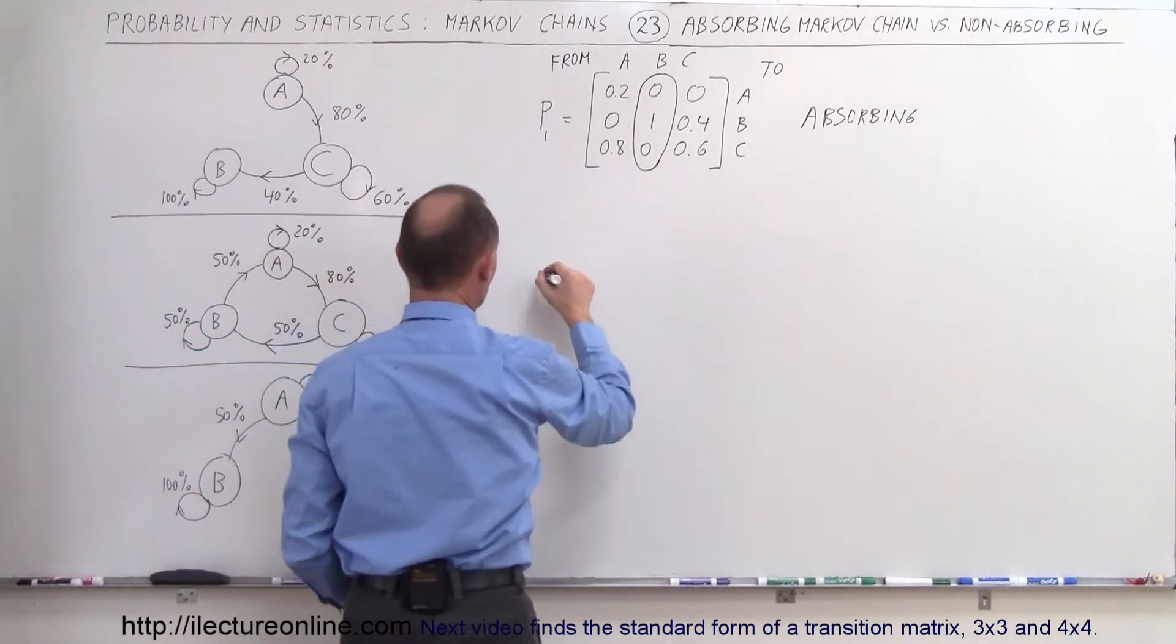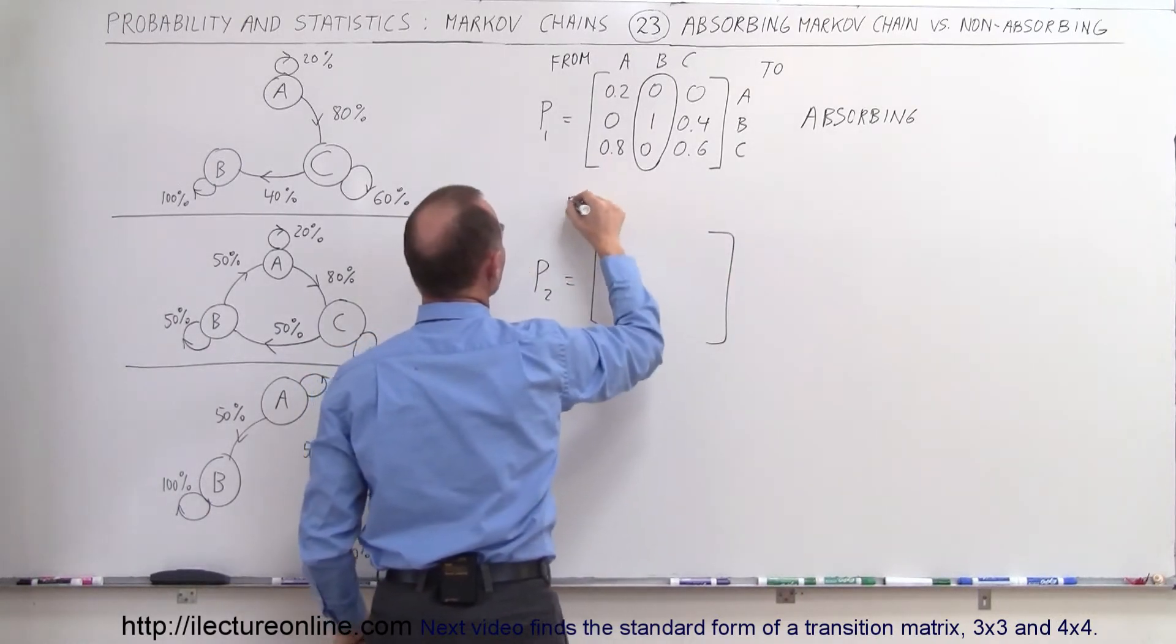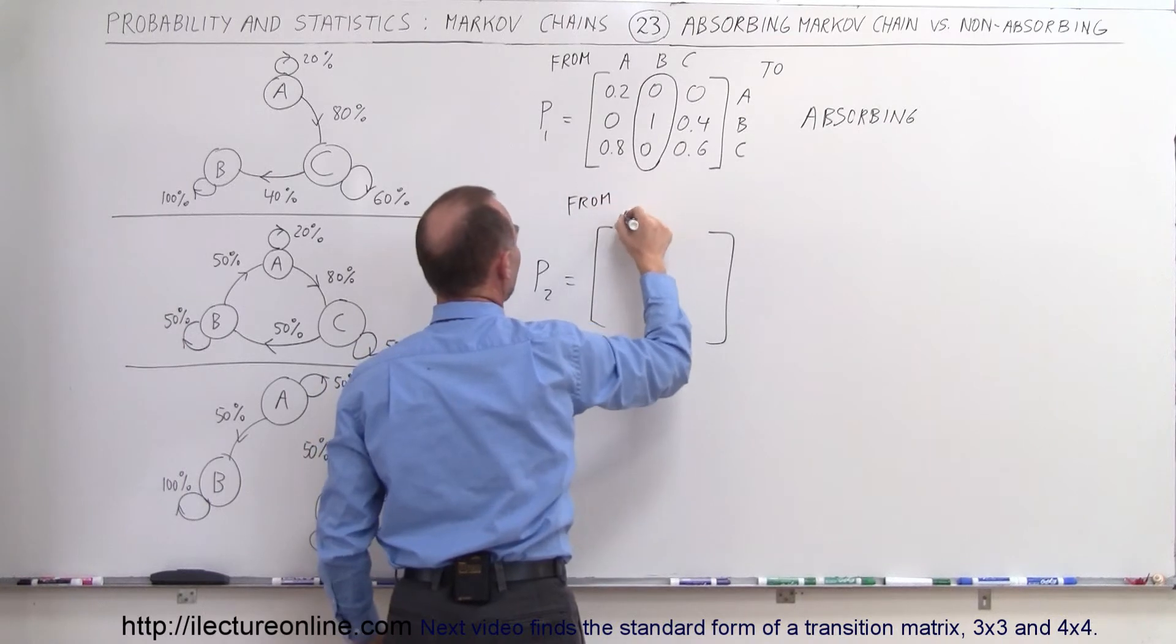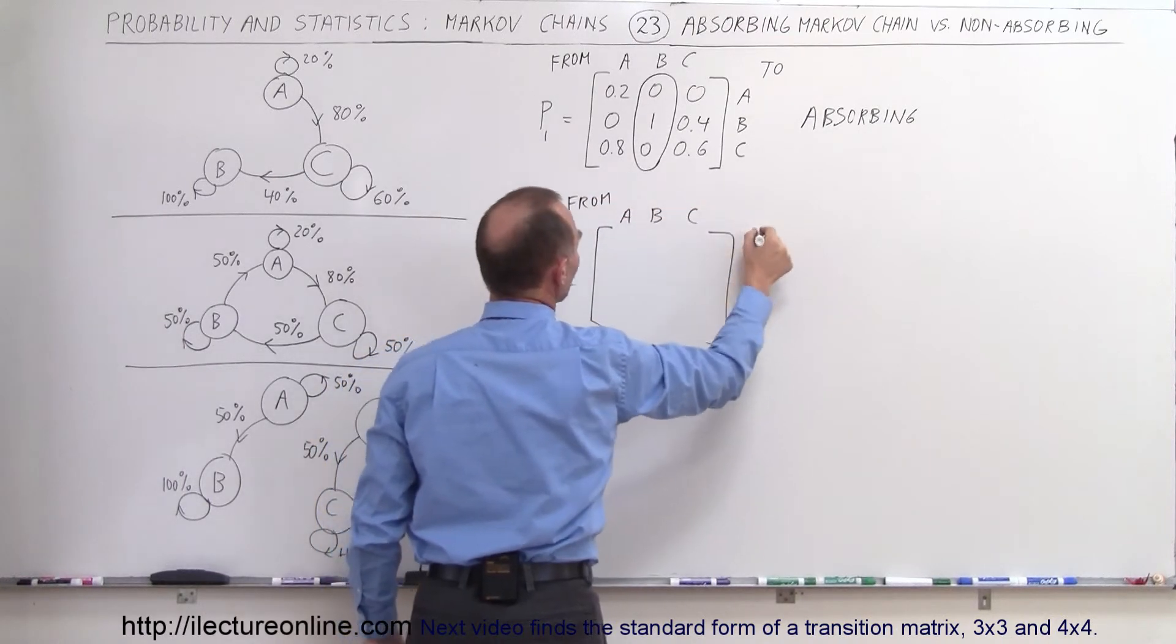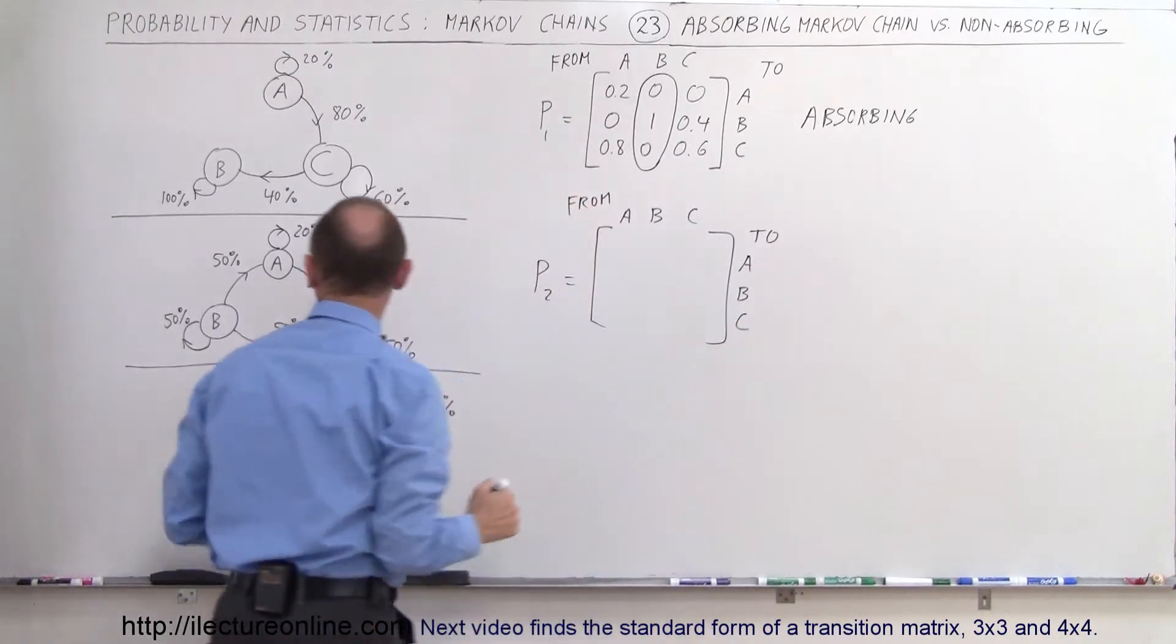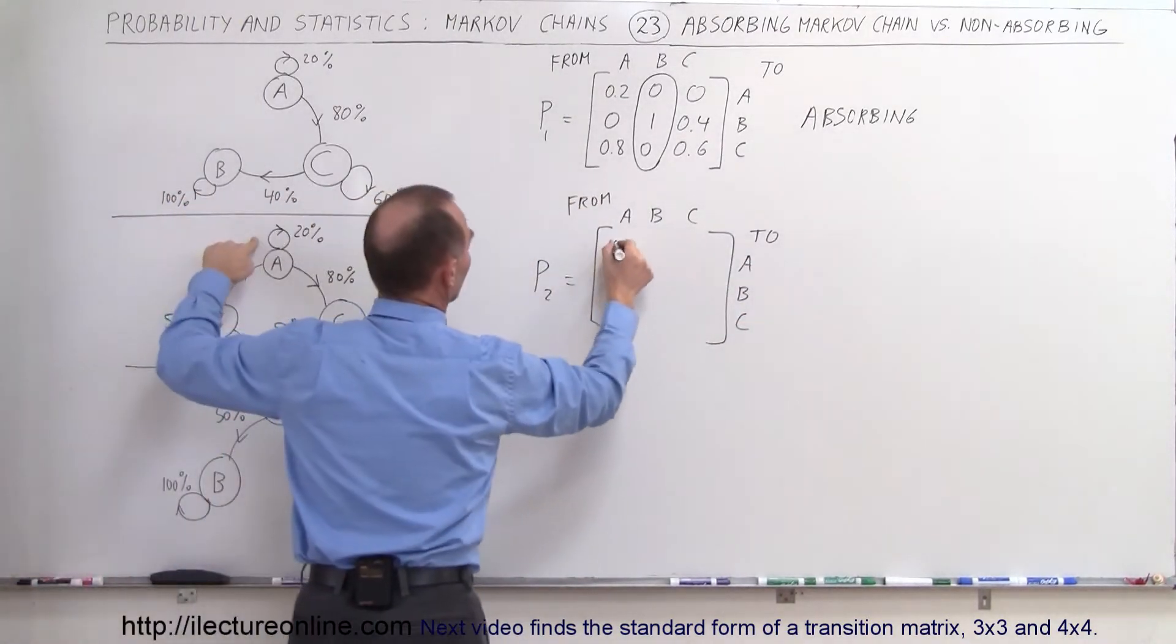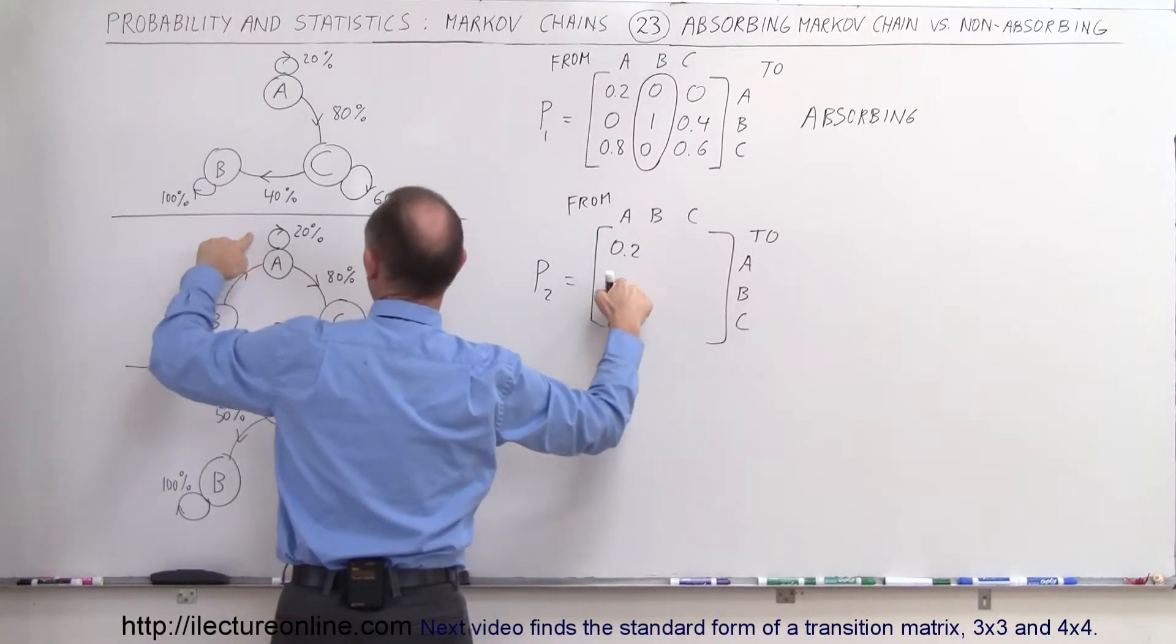Again, it's a 3 by 3. So let's call that transition matrix 2. And we need 3 elements. Again, we go from A, B, C to A, B, and C. So starting at A, notice that from A to A is 0.2. So from A to A, 0.2. From A to C, it's 0.8.